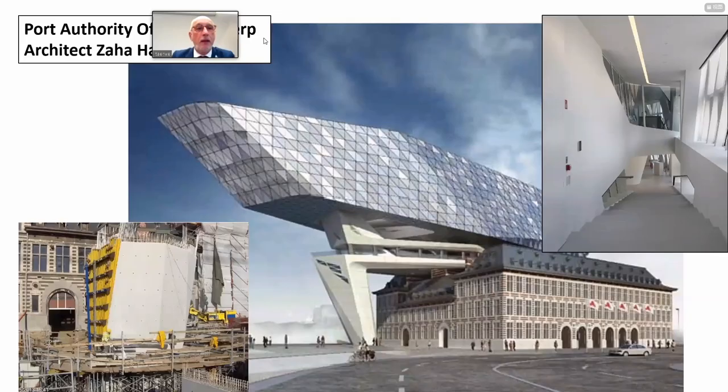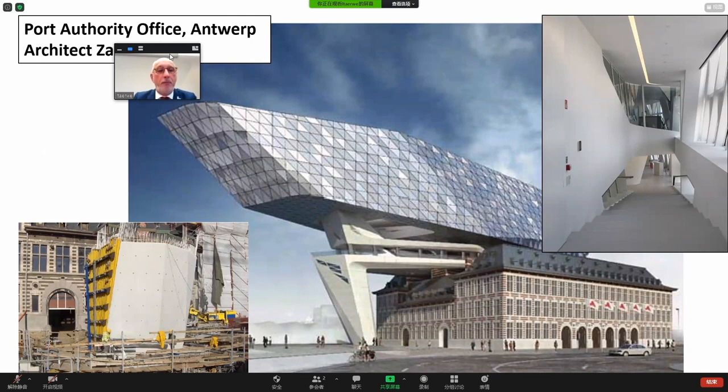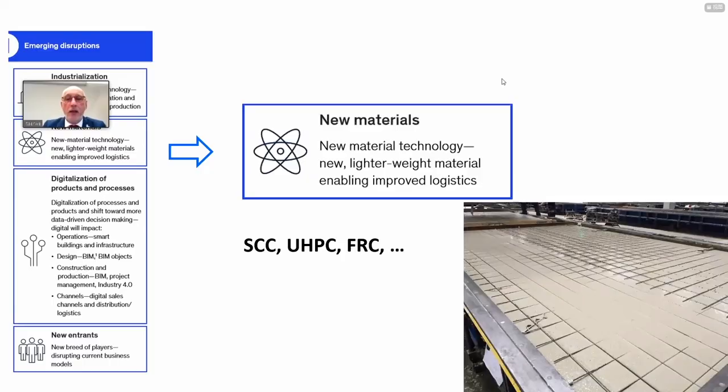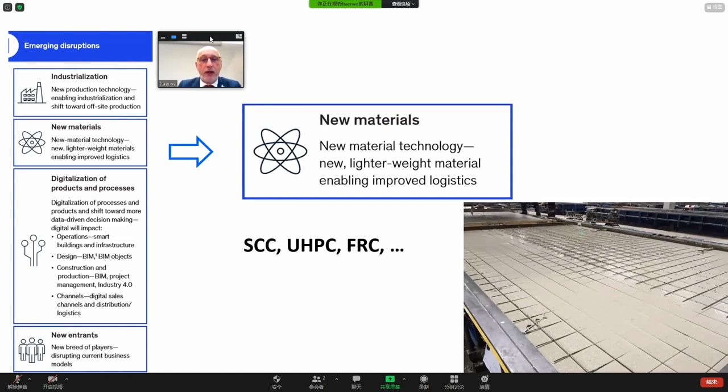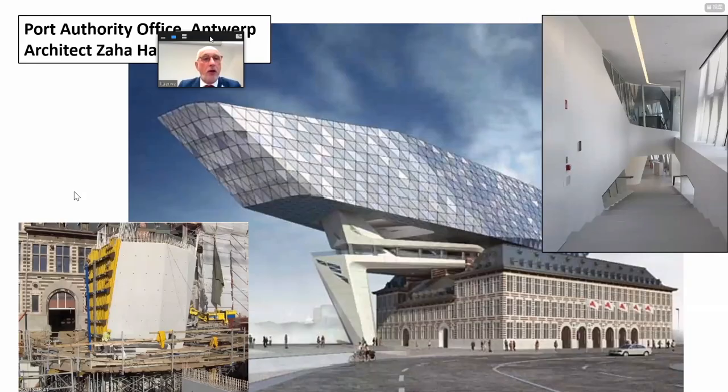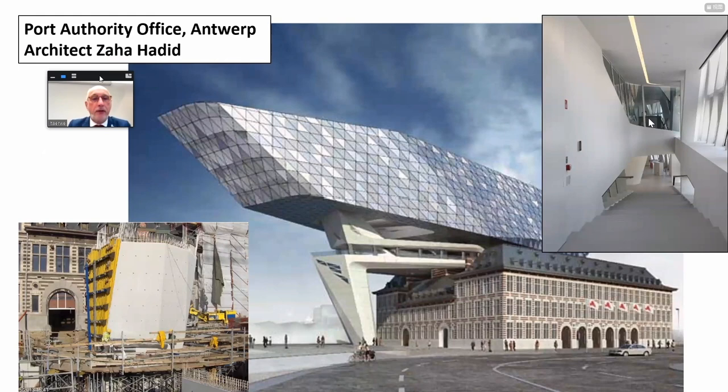On this picture you see the use of self-compacting concrete in a precast concrete factory. When you speak about self-compacting concrete, you see the new building of the Port Authority office in Antwerp, Belgium, designed by Zaha Hadid. The new structure — the outside columns but also the internal part — are all in white self-compacting concrete. Here are some inside pictures.